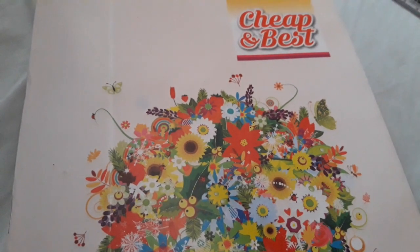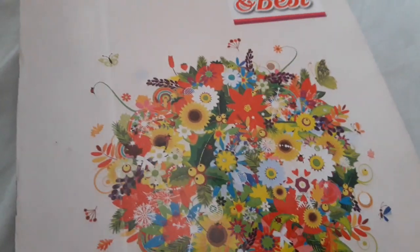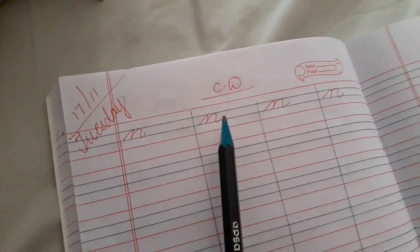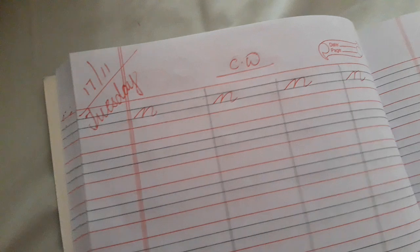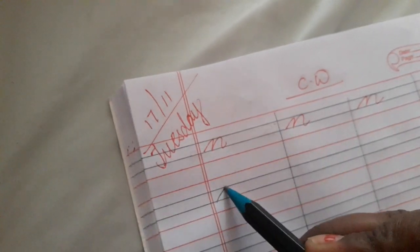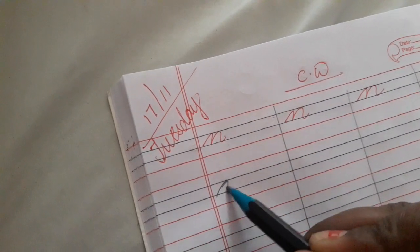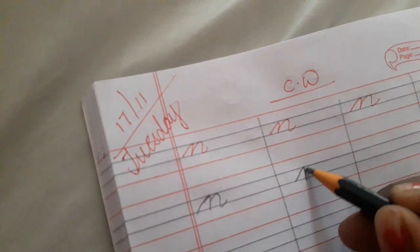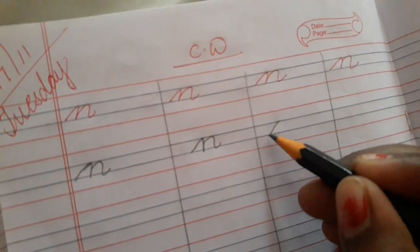Now children, check out your English notebook. Today we will learn small cursive alphabet 'n'. See how to write. Same like 'm', okay? Like this: slanting line, standing line, curve, slanting line, standing line, curve, standing line. Slanting line, standing line, curve, slanting line, standing line, curve, standing line.